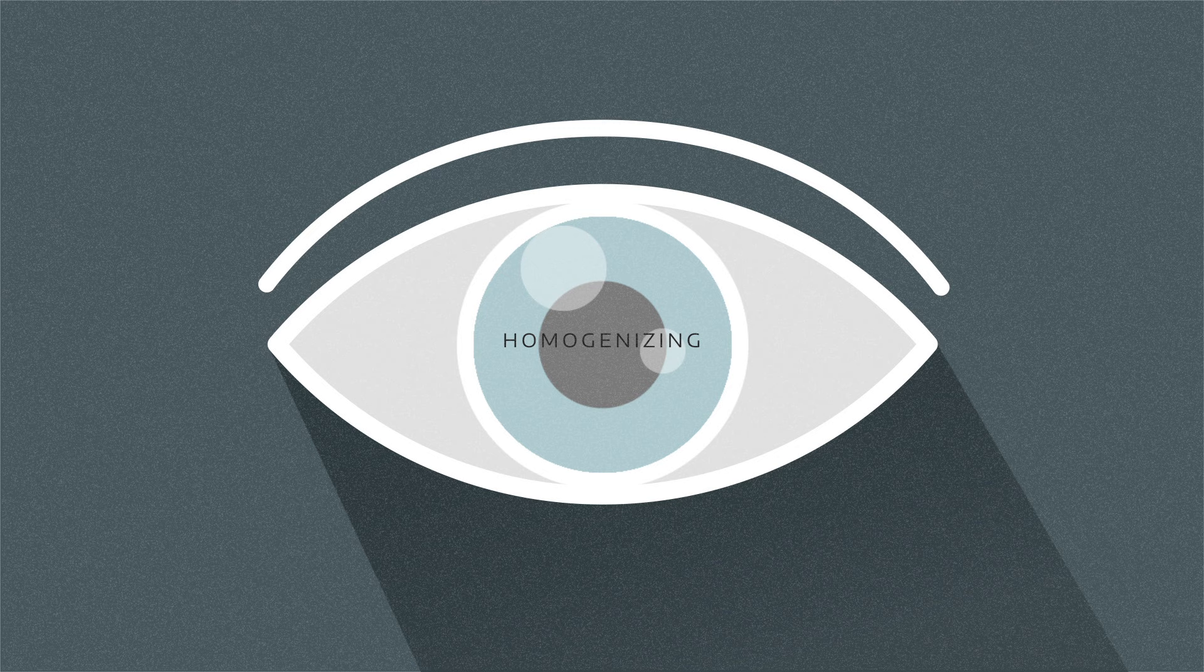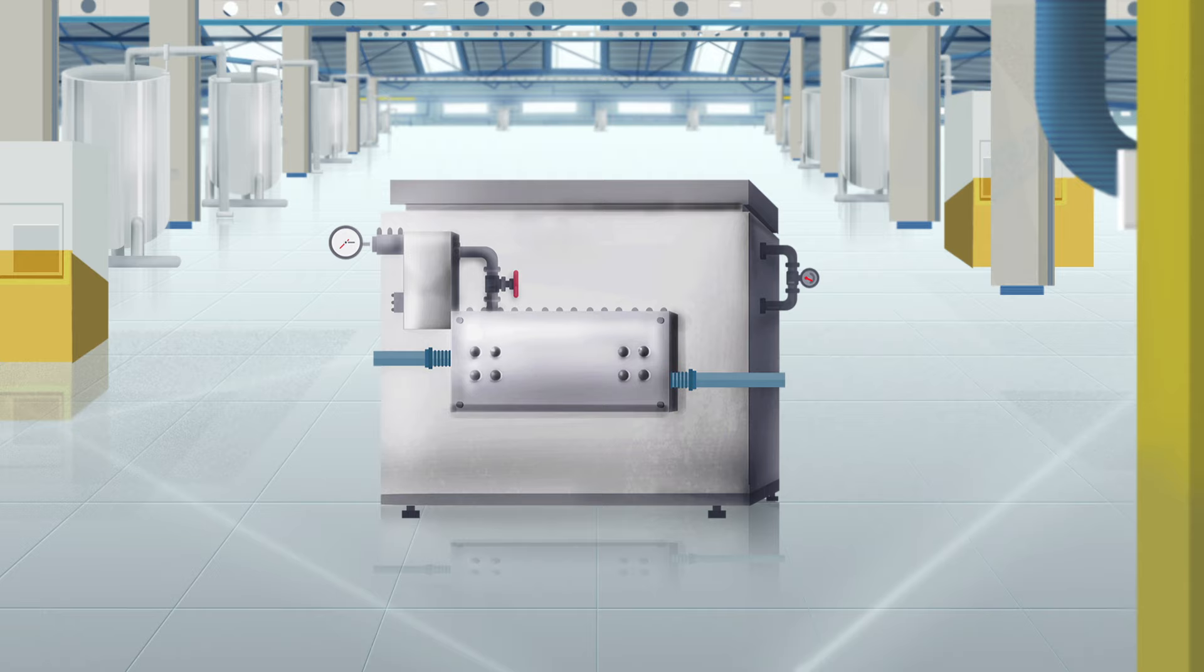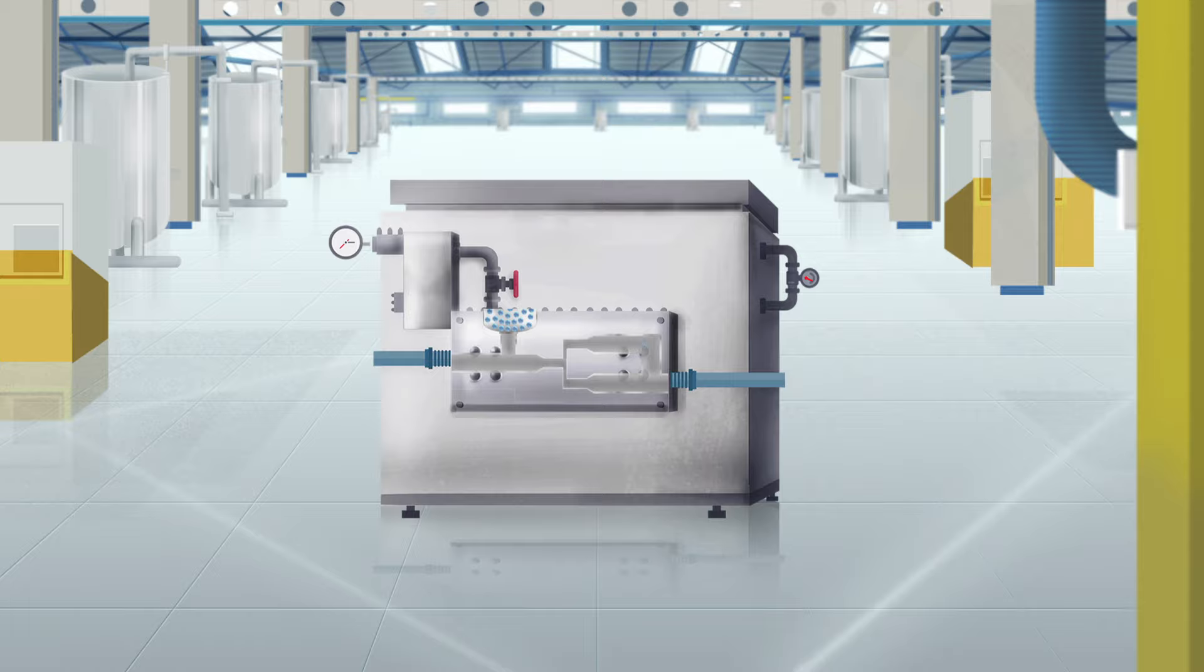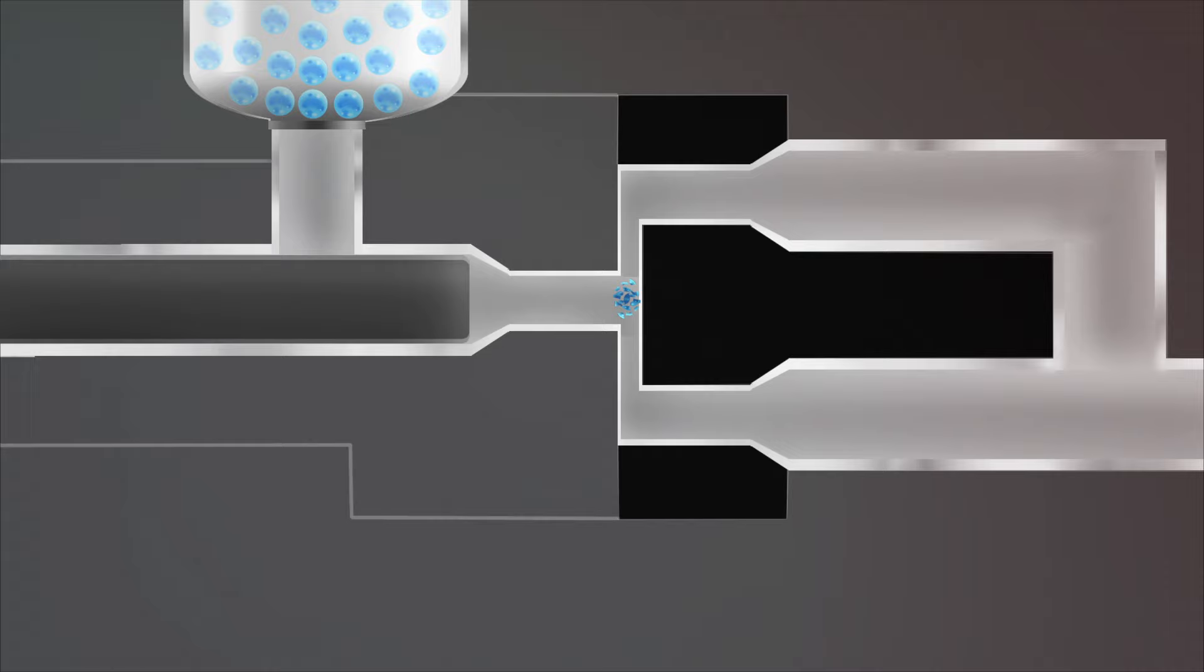When some people think of homogenizing, they think of high-pressure homogenizers. These are powerful devices that use a piston pump to force the product through a very small adjustable aperture at high pressure, the clue's in the name. And the combination of turbulence, cavitation and impact means the product is subjected to intense energy forces, reducing the particle or globule size down to sub-micron size.